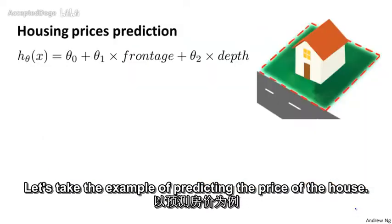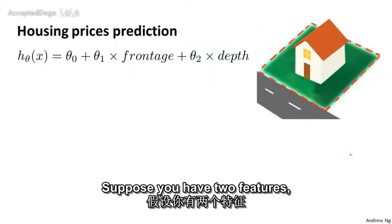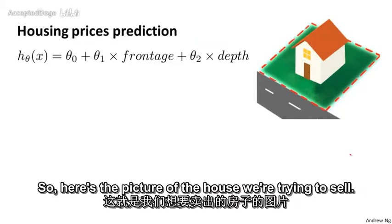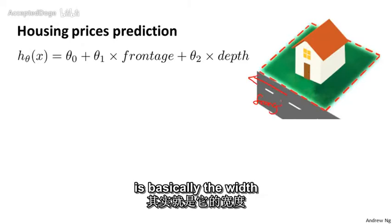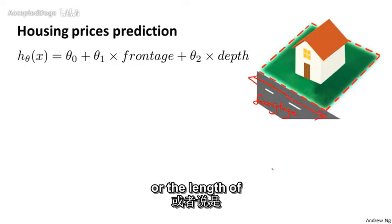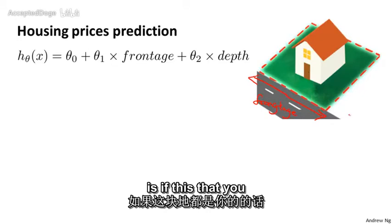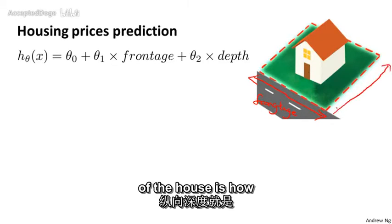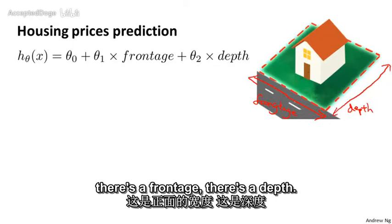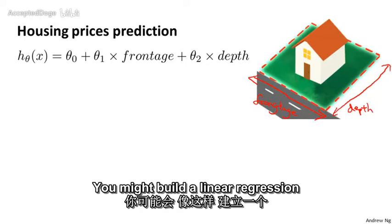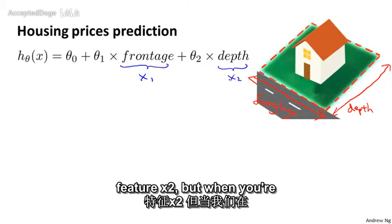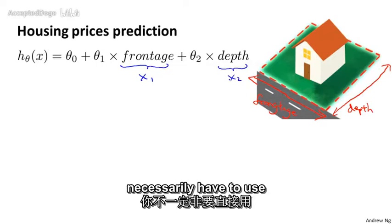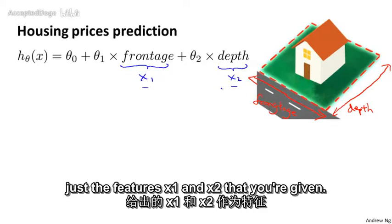Let's take the example of predicting the price of a house. Suppose you have two features, the frontage of the house and the depth of the house. So here's a picture of the house we're trying to sell. The frontage is defined as this distance. It's basically the width or the length of how wide your lot is, of this plot of land that you own. And the depth of the house is how deep your property is. So you have two features called frontage and depth. You might build a linear regression model like this, where frontage is your first feature x1, and depth is your second feature x2. But when you're applying linear regression, you don't necessarily have to use just the features x1 and x2 that you're given.